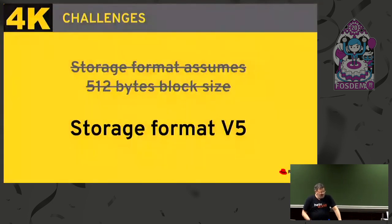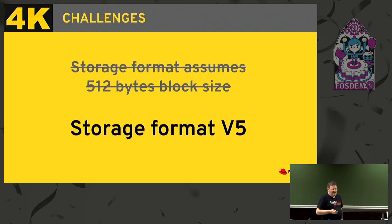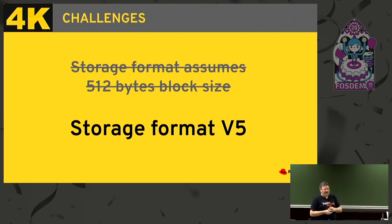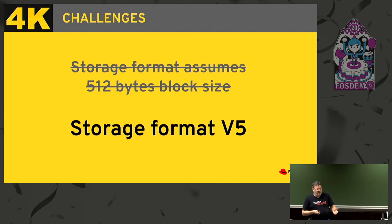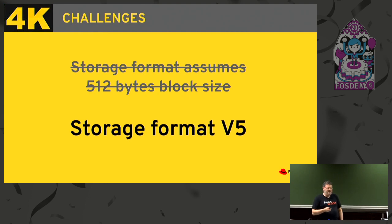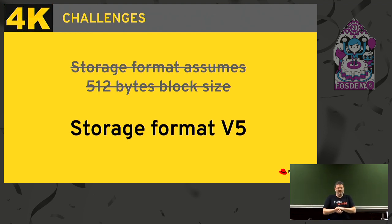This was fixed by introducing a new storage format: storage format V5. In oVirt, every storage format has a version, and we usually introduce a new version when we add new features. Storage format V5 is available since oVirt 4.3.0, so everyone running oVirt 4.3 has it. It supports any block size of the storage and uses the same layout for any block size, so with this format we can use 4K storage.